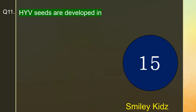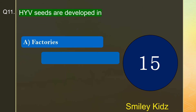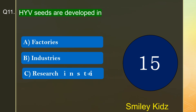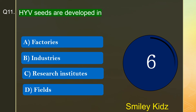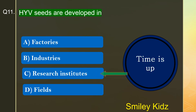Question number 11. HYV seeds are developed in dash. The options are A. Factories, B. Industries, C. Research Institutes, or D. Fields. Your time starts now. Your time is up and the right answer is option C. Research Institutes. HYV seeds are developed in Research Institutes.